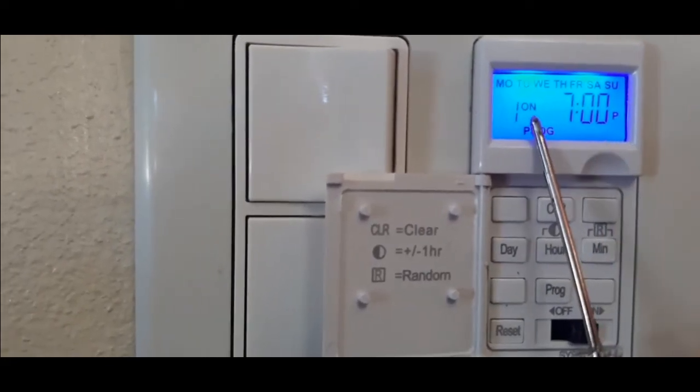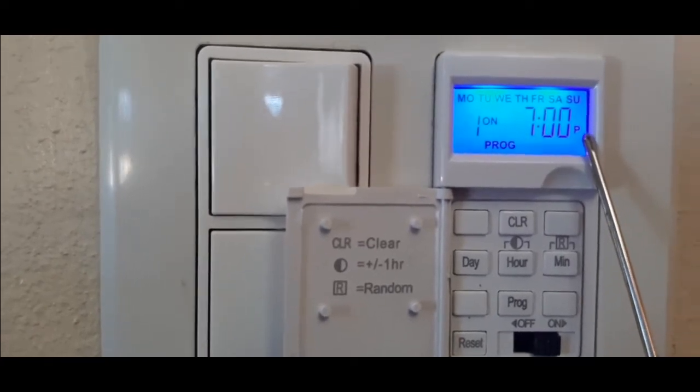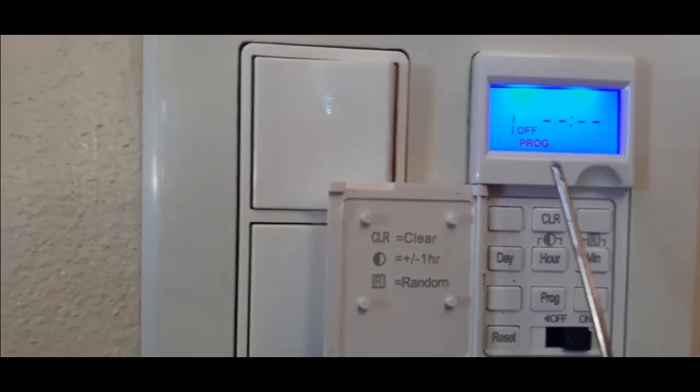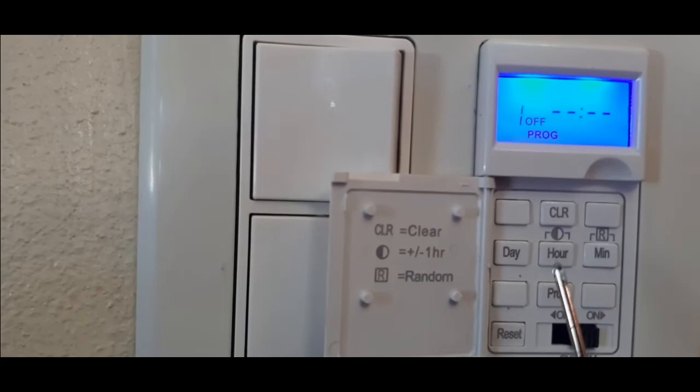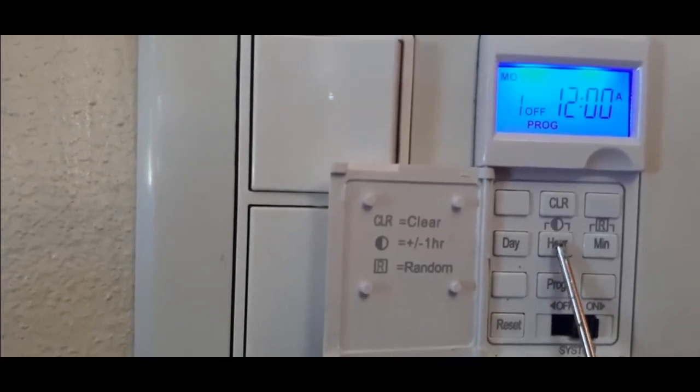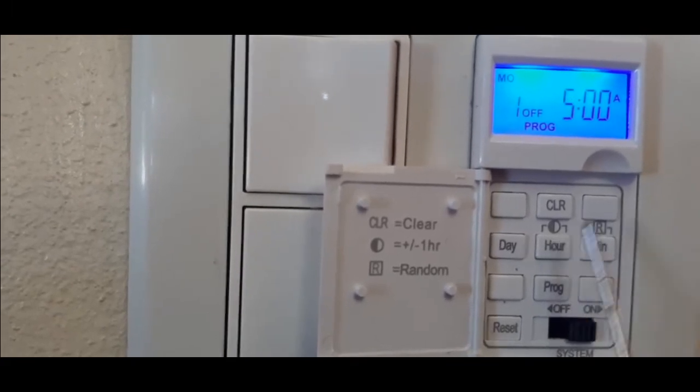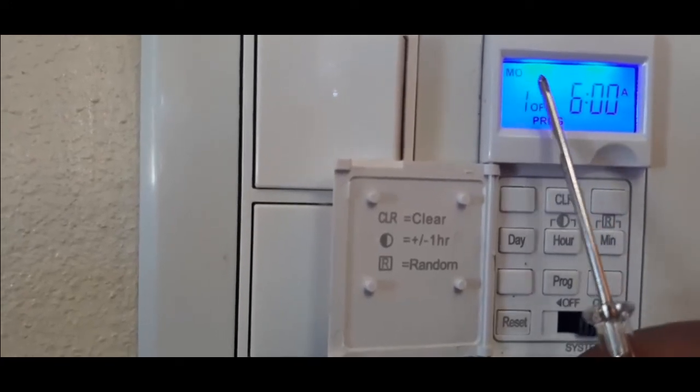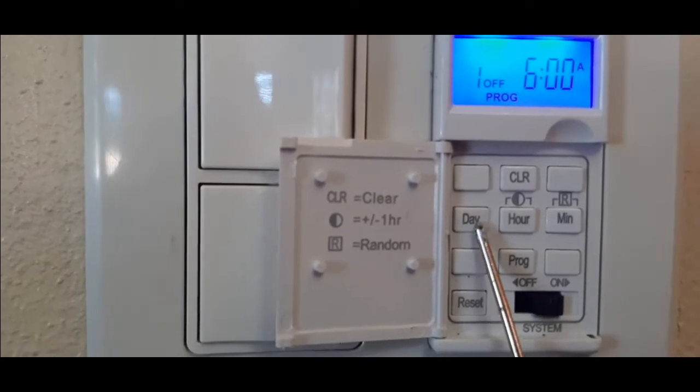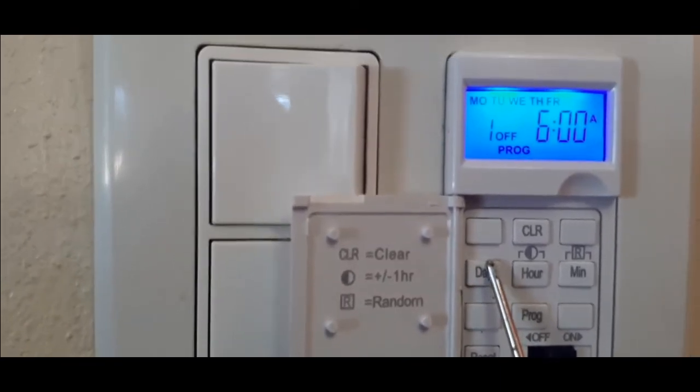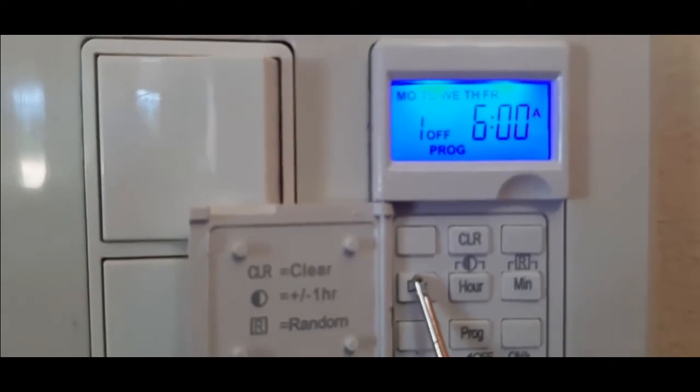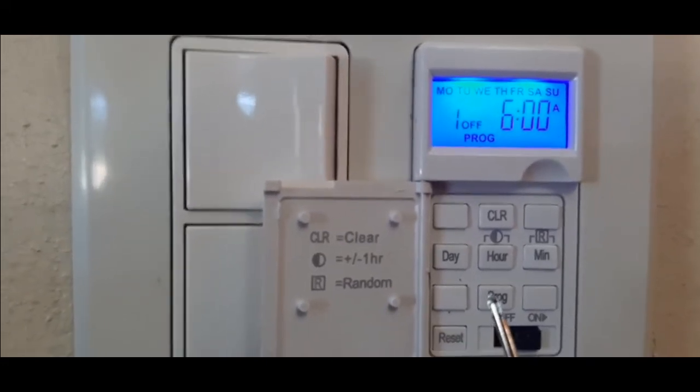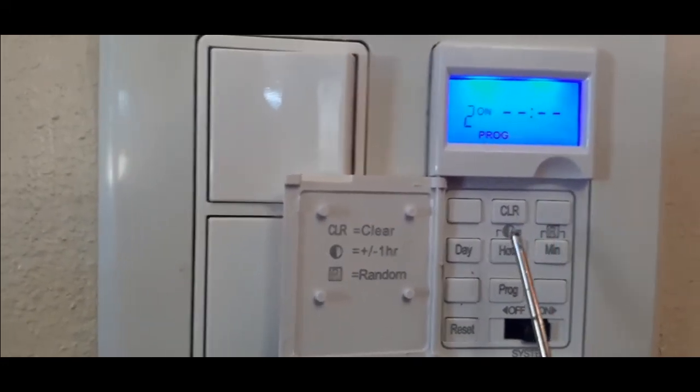And then I will program it again. Make sure the PM is there, or it will come on at 7 AM. So program it. This is the off time now. This represents the first programming mode or option. I want it to come off maybe around 5, 6 AM in the morning, and every day of the week. I'm going to do any specific day, not Monday to Friday, but I want it to come on and off on the weekends as well. And then you hit program again.